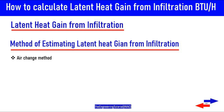In the first example, using the air change method, we estimated the quantity of air infiltrating into the space, which was 167 CFM of airflow, in order to calculate the latent heat gain from infiltration airflow in the space.